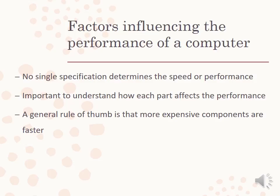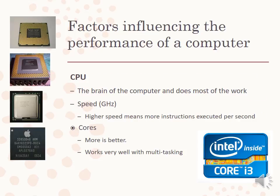We're going to look at many factors that influence the performance of a computer. You cannot say there's one single thing that will affect it, and it's important to understand how each different component affects performance, but generally the more expensive the components are, the faster they will help your computer to work. The CPU is a very important component — it's the brain of the computer and does most of the work. Its speed is measured in gigahertz, and higher speed means more instructions are executed per second. The number of cores is important; the more cores you have, the better it will work, especially for multitasking.